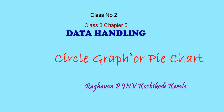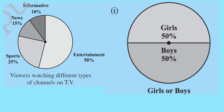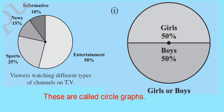Hi to all, welcome to my second class on data handling. Today I am going to discuss circular graphs or pie charts. Look at these two pictures. These are all data represented in a circular form. We already discussed many ways to represent data. This is another way of representing data in a graphical way. These are all called circle graphs or pie charts.